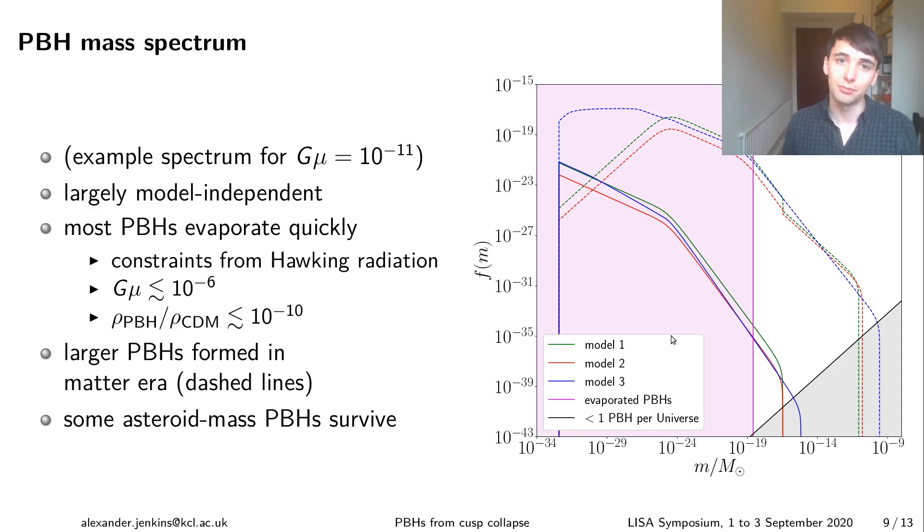So if you have a model for the loop network so how many loops there are of different sizes you can go away and calculate how many black holes of different masses you'll end up with in this way. So what I'm showing here is the fraction f of the energy density of dark matter that's made up by these black holes and where the x-axis is just different masses. So this is just an example spectrum for one particular value of Gμ but what you can see is that for the different loop network models so the red blue and green curves the spectra that you get are very similar.